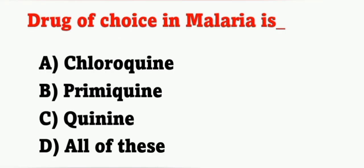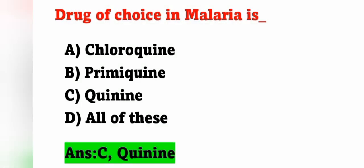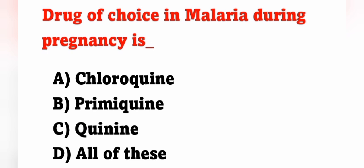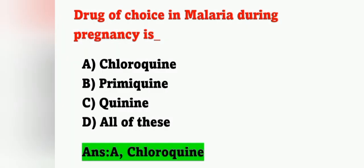Next question: drug of choice in malaria during pregnancy is — option A: chloroquine, option B: primaquine, option C: quinine, option D: all of these. Drug of choice in malaria during pregnancy is chloroquine, option A is the correct answer.